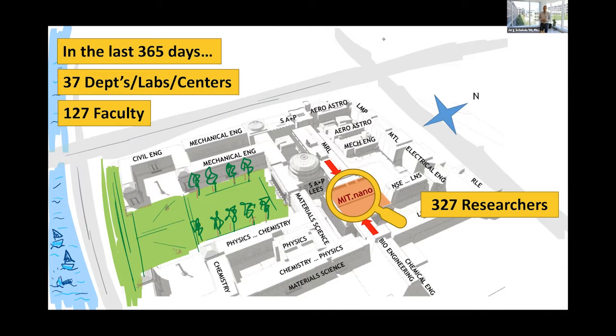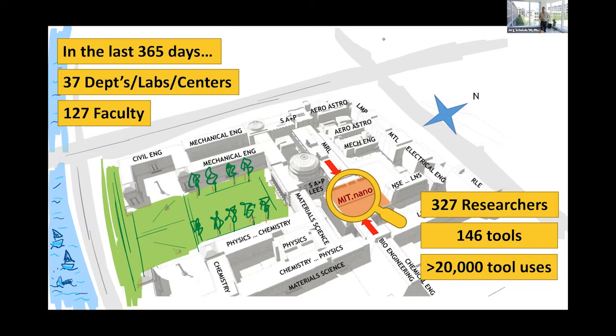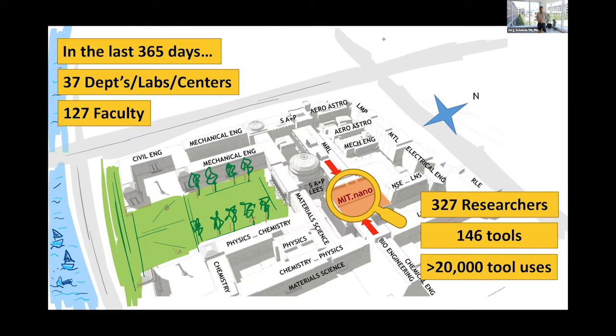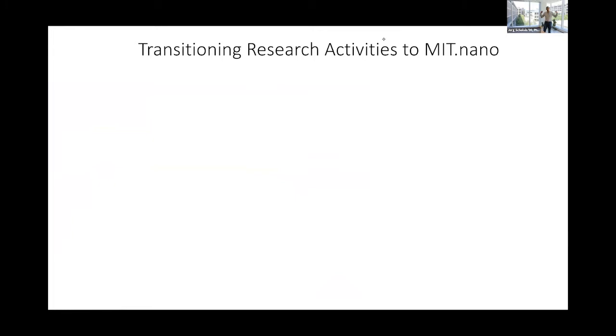Just to give you a sense for the magnitude or that range of diversity of disciplines, in the last 365 days, I'm just going to pick that as an arbitrary number here, we've seen researchers from 37 different departments, labs, or centers. And they came from 127 different faculty labs. It's a lot of different research going on from many, many areas of the Institute. Individually, this meant that there were 327 different researchers, postdoc graduate students, sometimes urop students in the building carrying out their work. And they've used 146 tools, and they had over 20,000 individual tool runs combined.